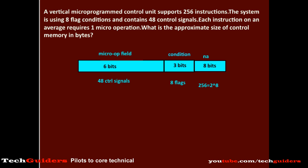6 bits are required in the micro-operation field. With 5 bits we can specify only 32 control signals, so minimum 6 bits are required.